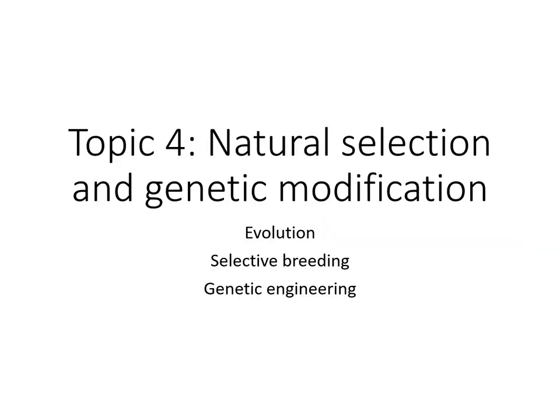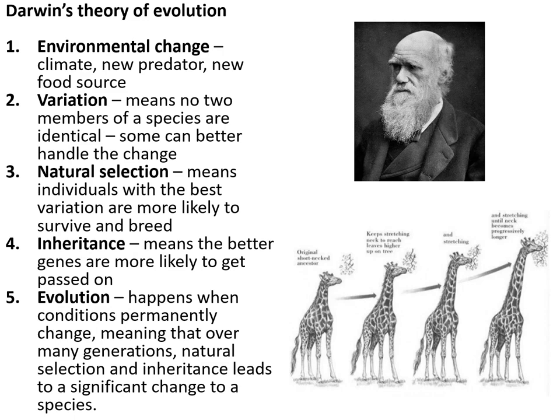Topic four: natural selection and genetic modification. Darwin's theory of evolution starts with environmental change — a new predator or climate change. Variation means some members are better able to handle that change. Natural selection means those with better characteristics are more likely to survive and breed, passing on their genes. Over many generations this leads to evolution and eventually an entirely new species.